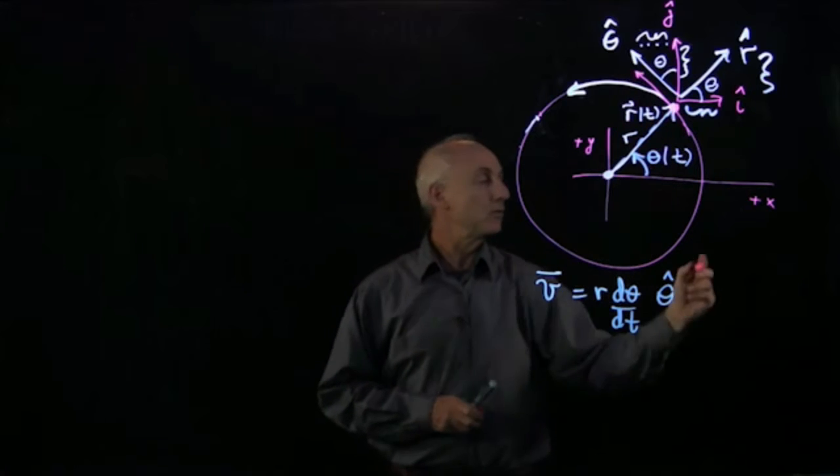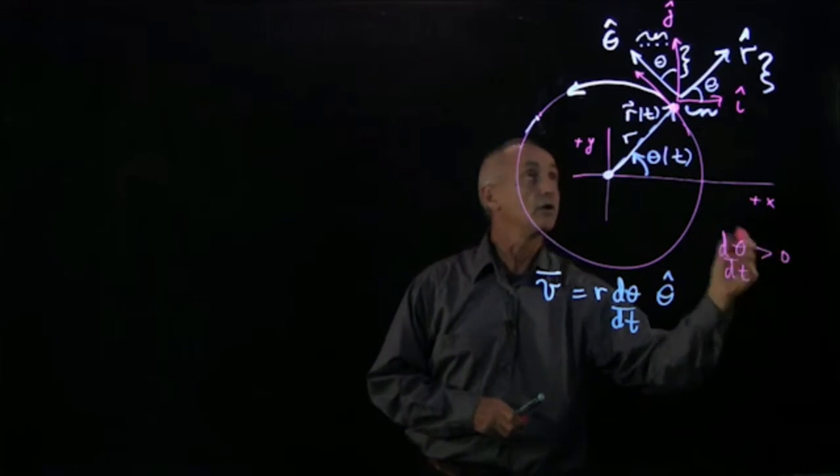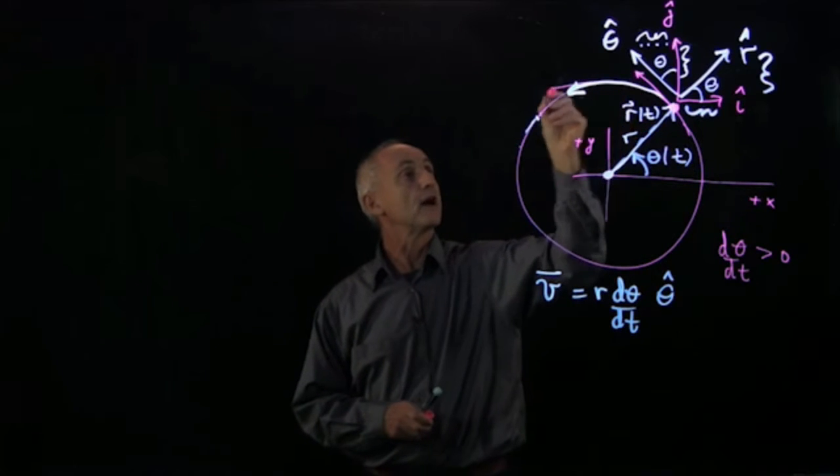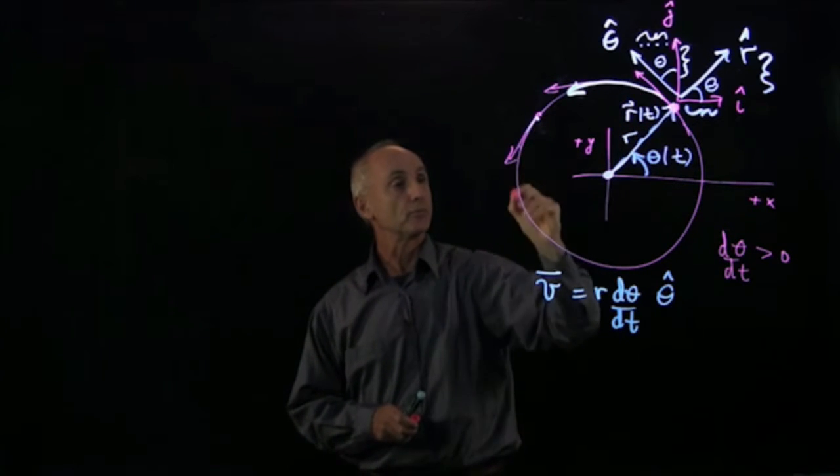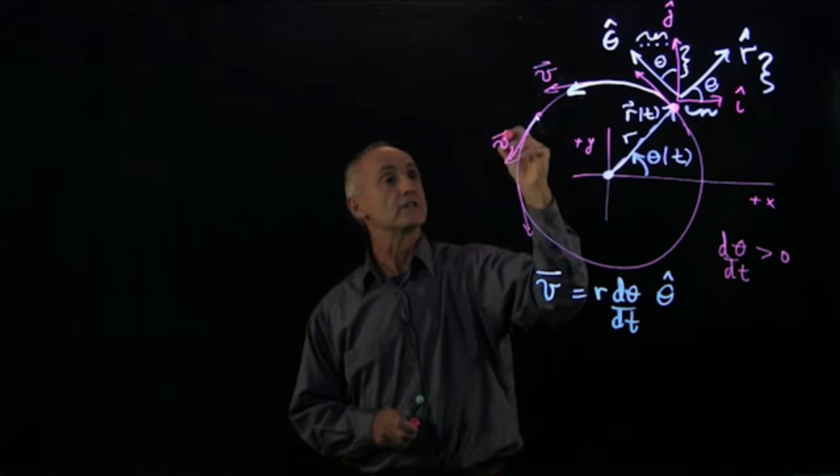So let's draw a few characteristic arrows to show that. At this point, we'll draw these pictures with dθ/dt positive. So the velocity points like that, it points like this, points like that. And these are all the velocity vectors at different times.